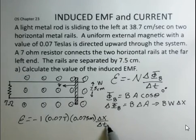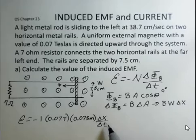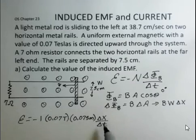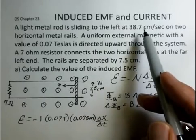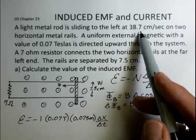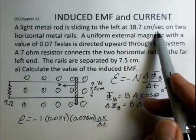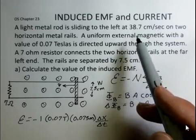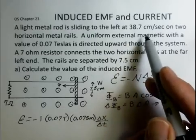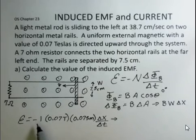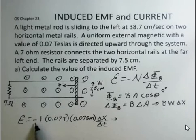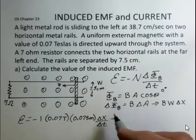Distance over time. Let's say the delta t was one second. What would the delta x be? We know that the rod is moving at 38.7 centimeters every one second. So it would be moving 0.387 meters in one second. So I'm going to continue this now. And I'm going to drop the minus sign and the one. We'll handle the minus sign later with Lenz's law.